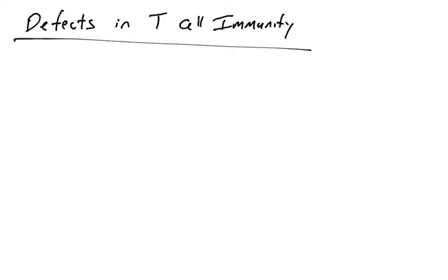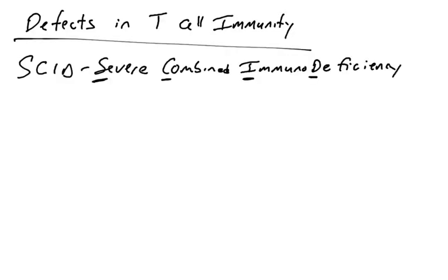Let's cover a few defects in T-cell mediated immunity. There are a number of them, and these are the few that I'm expecting you to know and understand, especially the cellular mechanisms by which these deficiencies are caused. The first one we'll talk about is SCID, Severe Combined Immunodeficiency, and there are a number of things that can cause SCID.